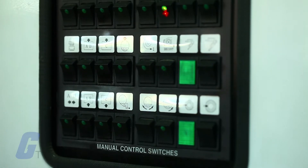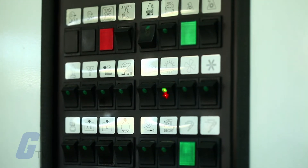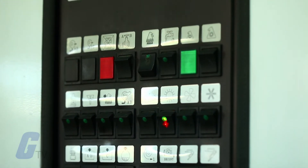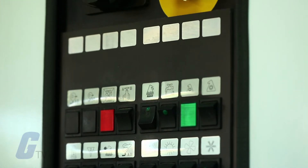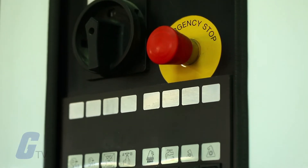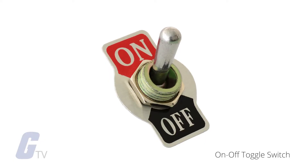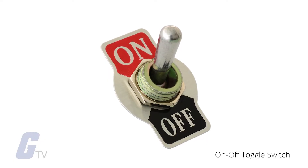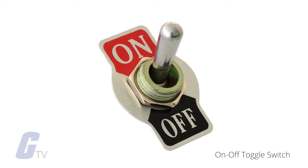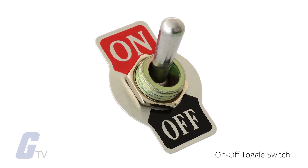When researching switches, you may have come across terms like pull and throw and wondered what they meant. Switches are primarily classified into four types. First is the single pole, single throw or SPST. The SPST is your basic on-off toggle switch and is used to connect or break the connection between two terminals.